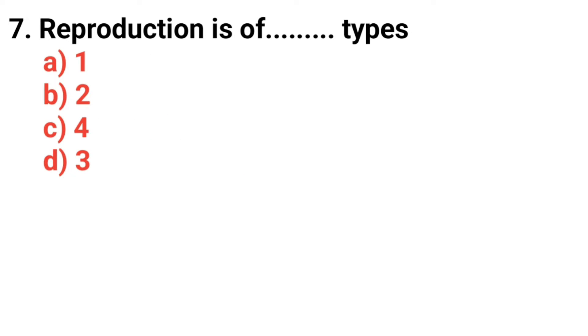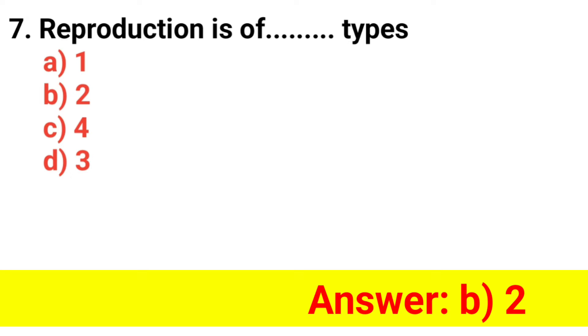Question 7. Reproduction is of how many types? The answer is 2.